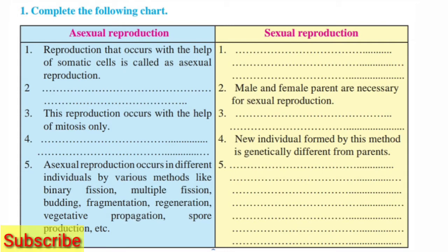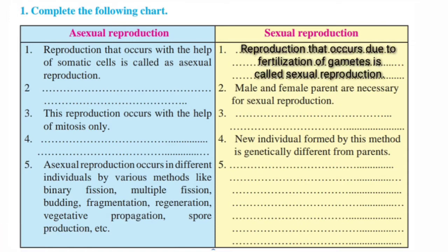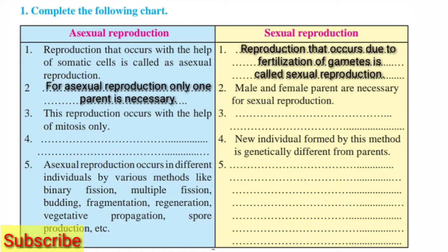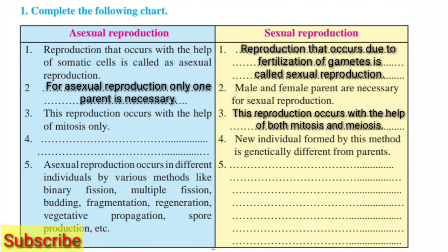Reproduction that occurs with the help of somatic cells is called Asexual Reproduction. Reproduction that occurs due to fertilization of gametes is called Sexual Reproduction. For Asexual Reproduction, only one parent is necessary. Male and female parents are necessary for Sexual Reproduction. This reproduction occurs with the help of mitosis only, and sexual reproduction occurs with the help of both mitosis and meiosis.